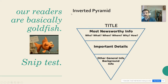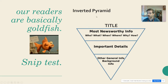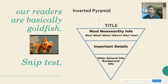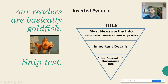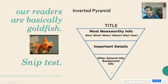Before we even get into leads, we need to talk about something called the inverted pyramid. This is how we're going to organize largely all of our articles. What the inverted pyramid means is we're going to start with the most interesting, most relevant information and give it to our readers. Then we go to the next most interesting piece of information, and then the next, all the way until we get to whatever is not really that important anymore.